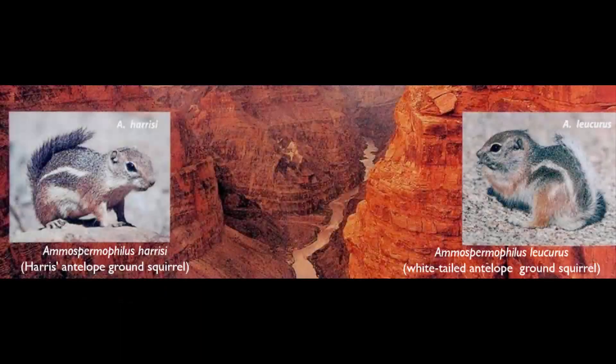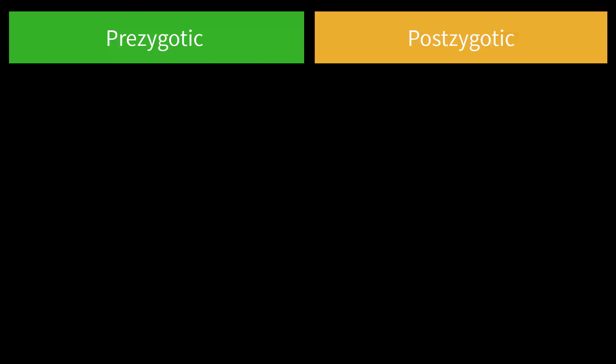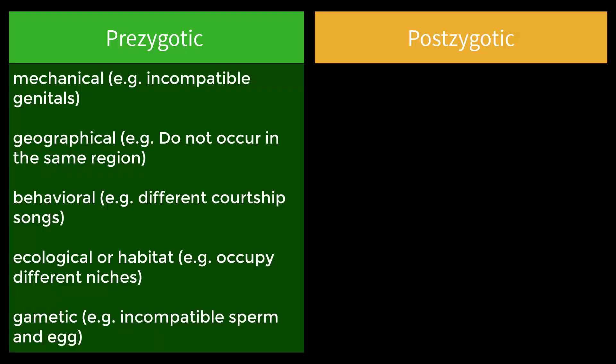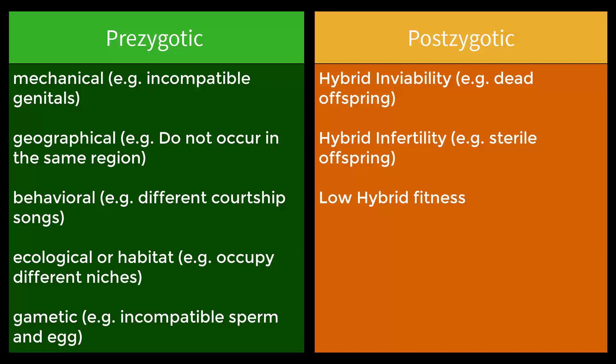When species form, that means barriers to reproduction have also formed. These barriers can be roughly categorized as prezygotic and postzygotic barriers. Prezygotic barriers can be mechanical, geographical, behavioral, temporal, ecological or habitat, and gametic. Postzygotic barriers include hybrid inviability, hybrid infertility, or low fitness for hybrids for any other reason.